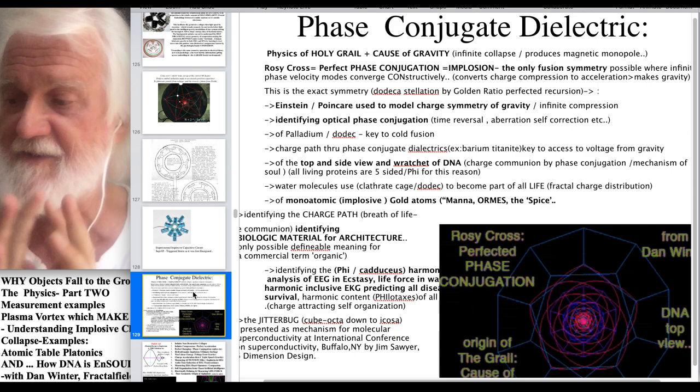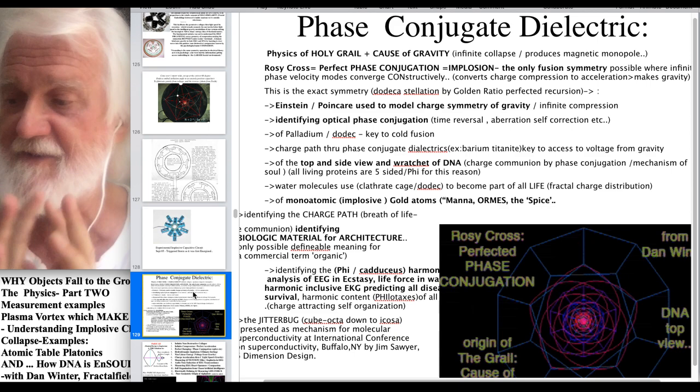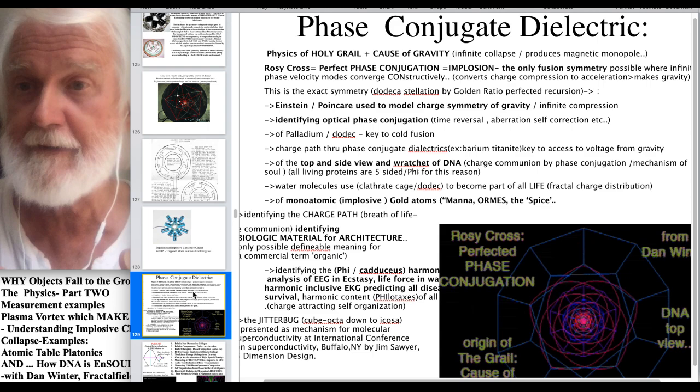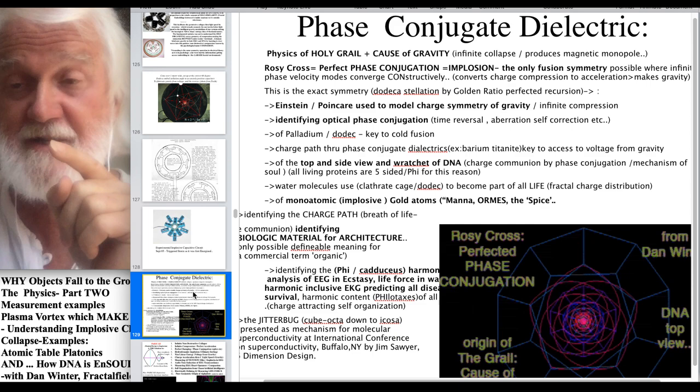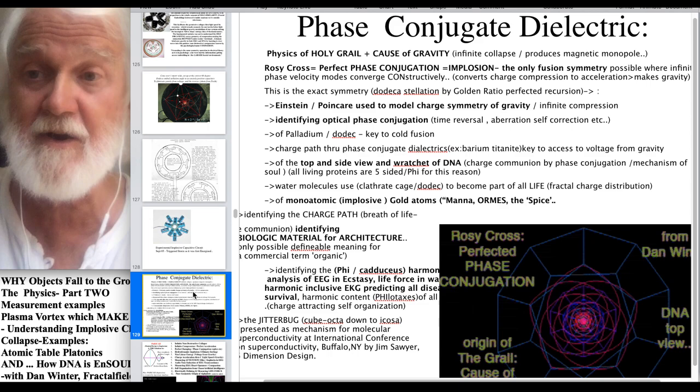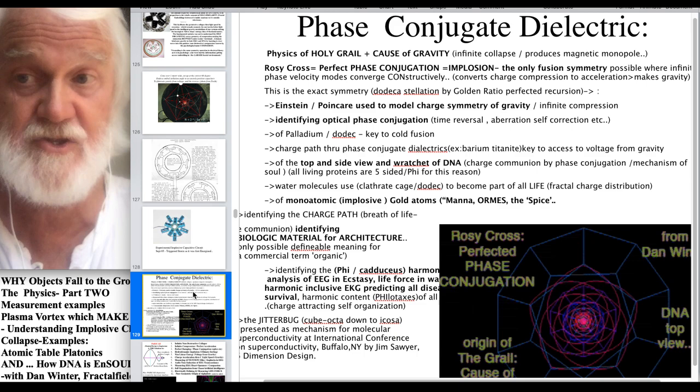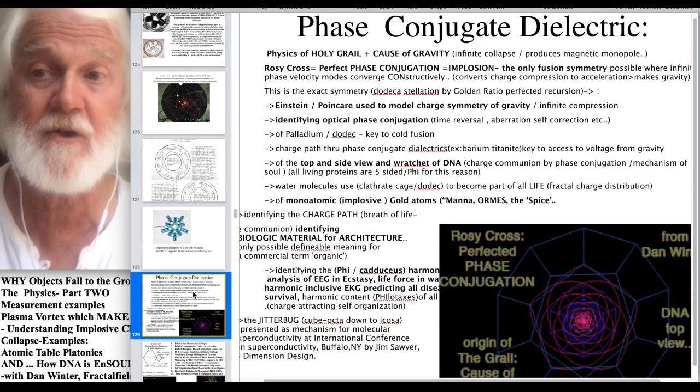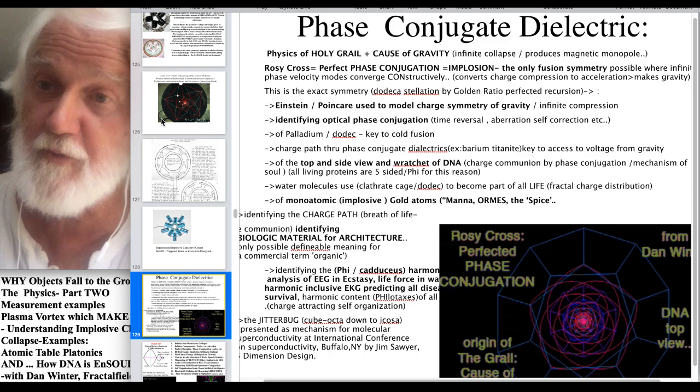And then we talked about phase conjugate dielectrics, which are implosive media within which this implosive capacitance can propagate, hence phase conjugate mirrors and scrying and all that fun stuff. So, the second half of this conversation will now be about using, first, the atomic table's platonic symmetrics as an example of proven perfected charge collapse, hence extending our idea about, okay, I newly proved that hydrogen is fractal, and I strongly suggest that's the smoking gun for how hydrogen is making gravity by golden ratio phase conjugation. Now we extend that to the atomic table, and then finally we will move on to how that same implosive capacitance applies to DNA.